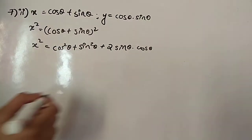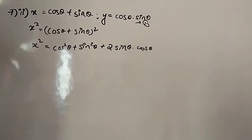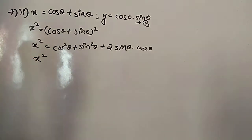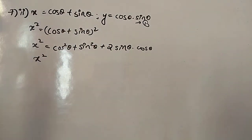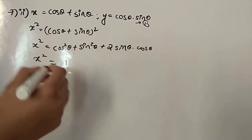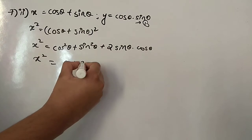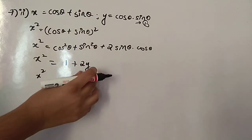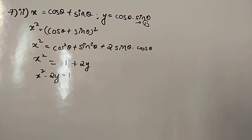From the first equation we take this expansion. Now, sin θ·cos θ appears in the second equation as y. So x² equals cos²θ + sin²θ, which is 1, plus 2·sin θ·cos θ, which is 2y. So x² = 1 + 2y. Bringing 2y to the LHS: x² − 2y = 1. We have completed this part.